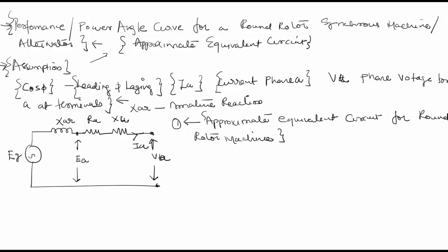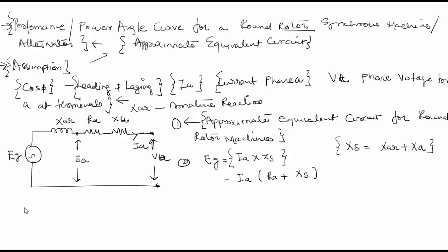Based on this equivalent circuit, EG is equal to IA into ZS, which can be written as IA into RA plus XS, where XS is equal to XAR plus XA, which is equal to the synchronous reactance. This is the second step.